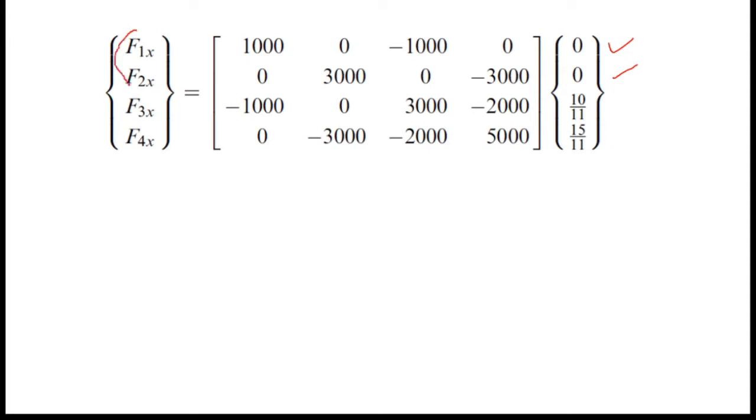We know F3x equals 0 and F4x equals 5000 because it is given in our example. So now I just have to multiply values in order to get F1x and F2x.